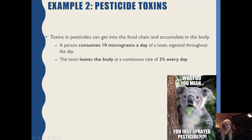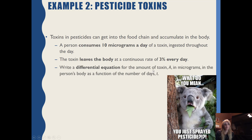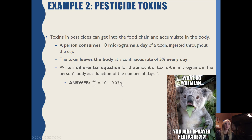Toxins and pesticides can accumulate in the body. A person consumes 10 micrograms a day — that's the rate in — and the toxin leaves the body at 3% per day — that's the rate out. The differential equation for the amount of toxin: the change in amount over change in time equals 10 micrograms per day minus 3% of the amount that's present. Note that the percentage goes on the function, since this amount A is really A of t — a function of the amount at a particular time.